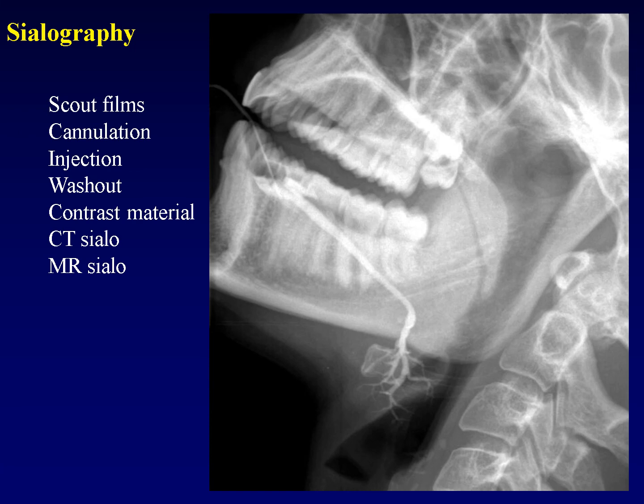When this examination is performed as a CT sialogram, very dilute iodinated contrast is used. When performed as an MR sialogram, either very dilute gadolinium-based contrast can be used, or just water can be used, and high-resolution T2-weighted images are obtained to image the duct.